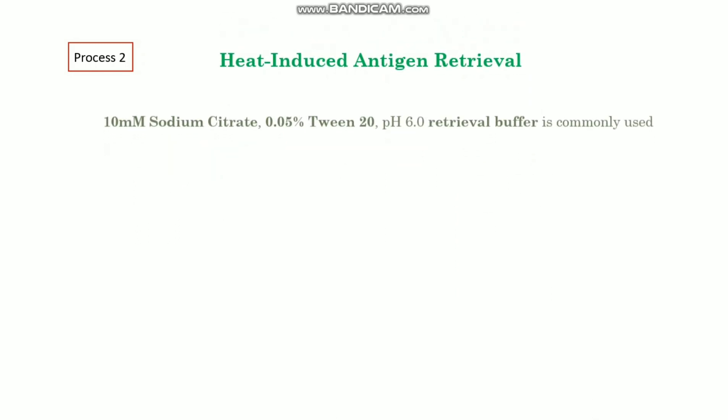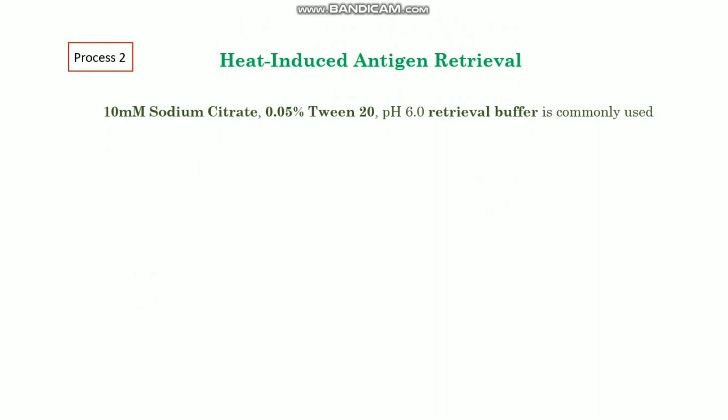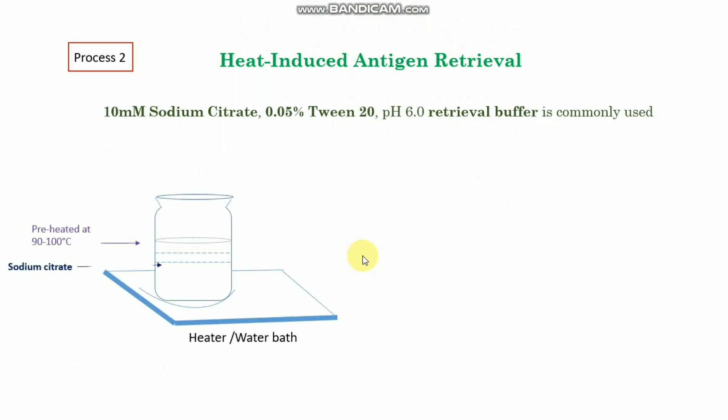The second and most commonly used method is heat-induced antigen retrieval. Here, we use citrate buffer — 10 millimolar sodium citrate with 0.05% Tween 20 — and the pH needs to be maintained at 6, although this pH can vary depending on the type of tissue. The sodium citrate solution is placed in a container and preheated to 90–100°C, and then the slides are placed in the sodium citrate and kept for 15 to 20 minutes.